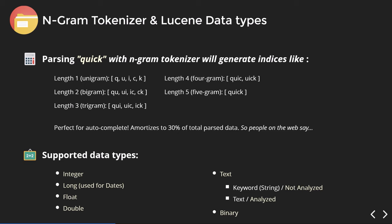What are the data types supported in Lucene? You have integer, long — used for dates as well — float, double, text, and binary. For text, you can have it as a keyword string, meaning not analyzed, or as analyzed text. Keyword is for when you want a sentence or multiple words to be the key, while analyzed text is where the tokenizer processes it.